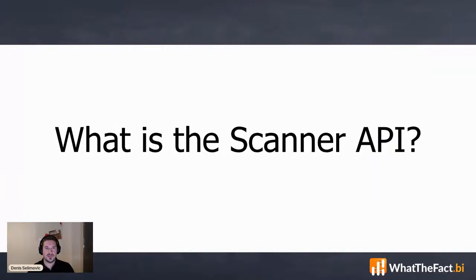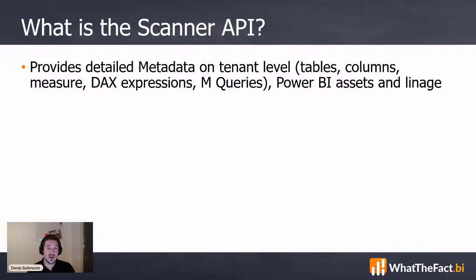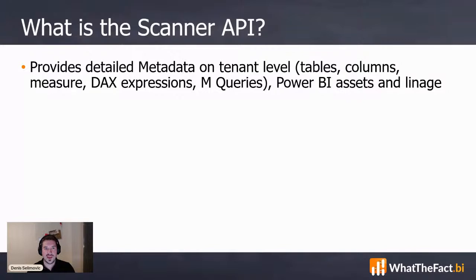In general, the Scanner API is a scanner for the Power BI tenant that provides a really detailed level of insights. It scans the metadata, so we get information at a fine granularity — information about tables, columns, down to the measures, DAX expressions, M queries, Power BI assets, and also the lineage. The difference compared to normal log analytics is the detail and the way the API is built. With normal logs, you cannot go so deep into details. The Scanner API is actually scanning what is going on in your tenant and showing you the result from the other way around than you would do with a normal API call.